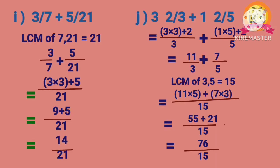Problem I: 3 by 7 plus 5 by 21. As the denominators are different, we calculate the LCM. LCM of 7 and 21 is 21. After calculating the LCM, we can add the fractions and we get 14 by 21.